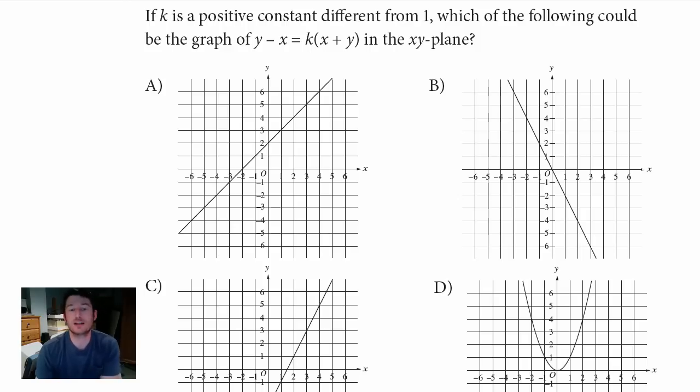if k is a positive constant different from 1, which of the following could be the graph of y minus x equals k times x plus y in the xy plane? So how are you going to do this one? Did you take a look at it yet? Did you pause the video and try it? If not, you can.